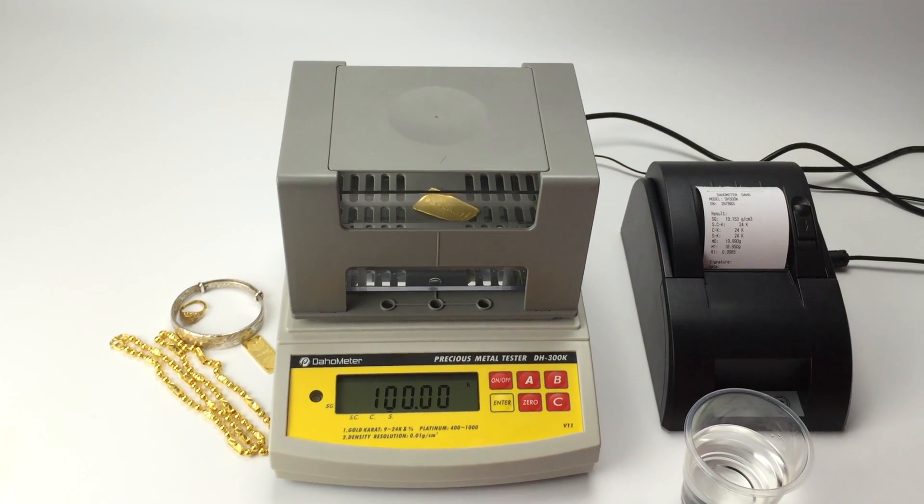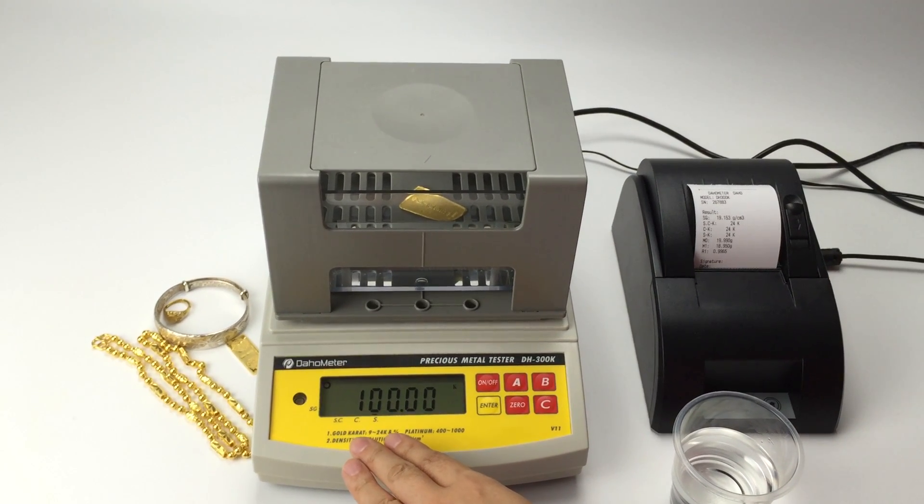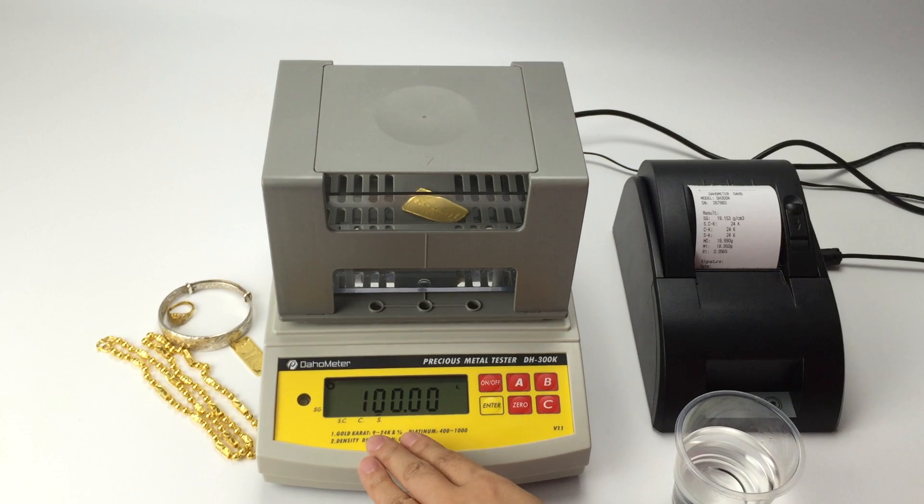Press A again. The purity percentage is for gold, silver.